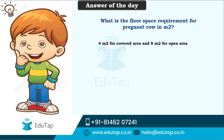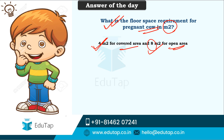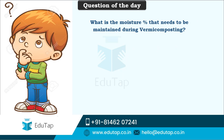Now here comes the most awaited section — the answer of the day. The question from the last lecture was: what is the floor space requirement for a pregnant cow in square meters? The correct answer is 4 square meters for covered area and 8 square meters for open area. Some of you mentioned 12 square meters — that applies to cows about to give birth, who require more space. For a normal non-pregnant cow, the requirement is 3.5 square meters for covered area and 7 square meters for open area.